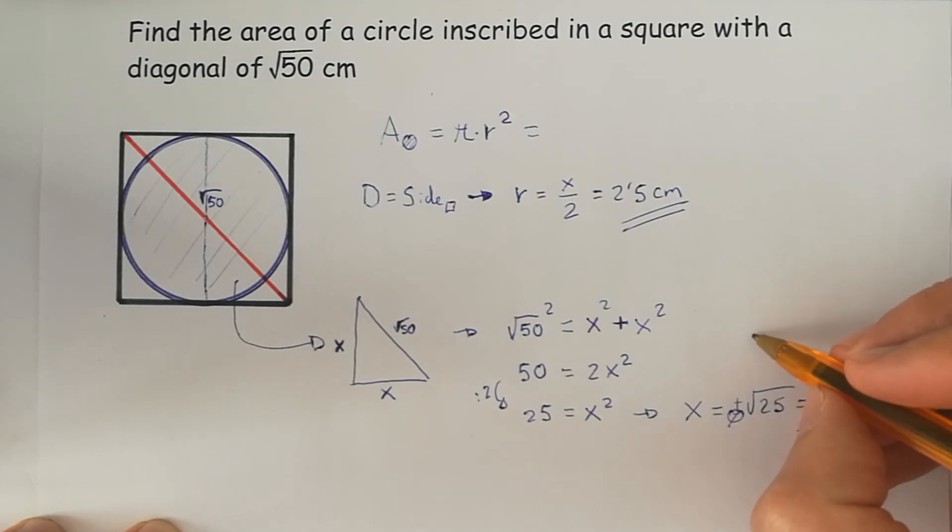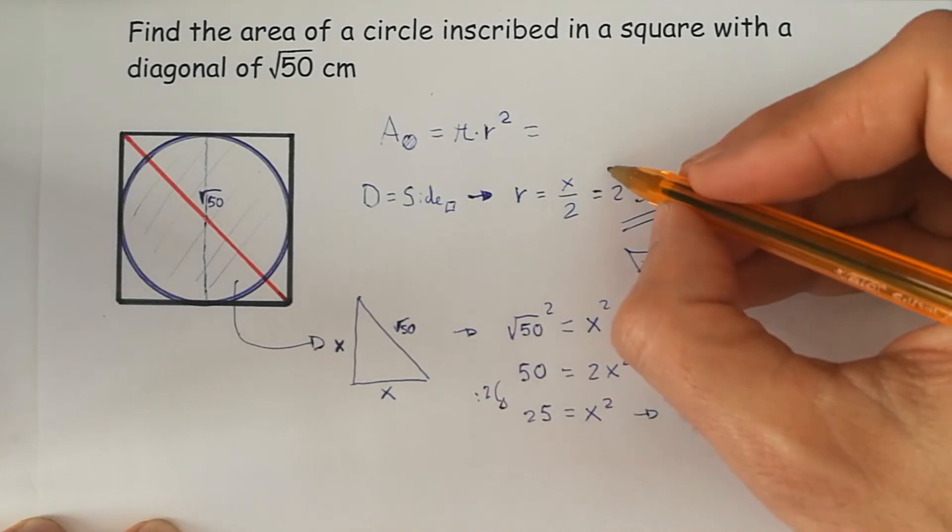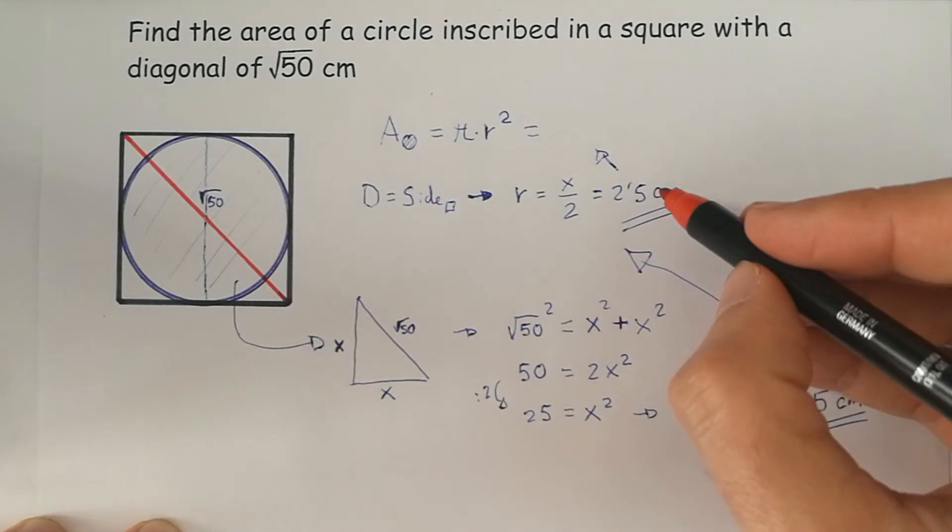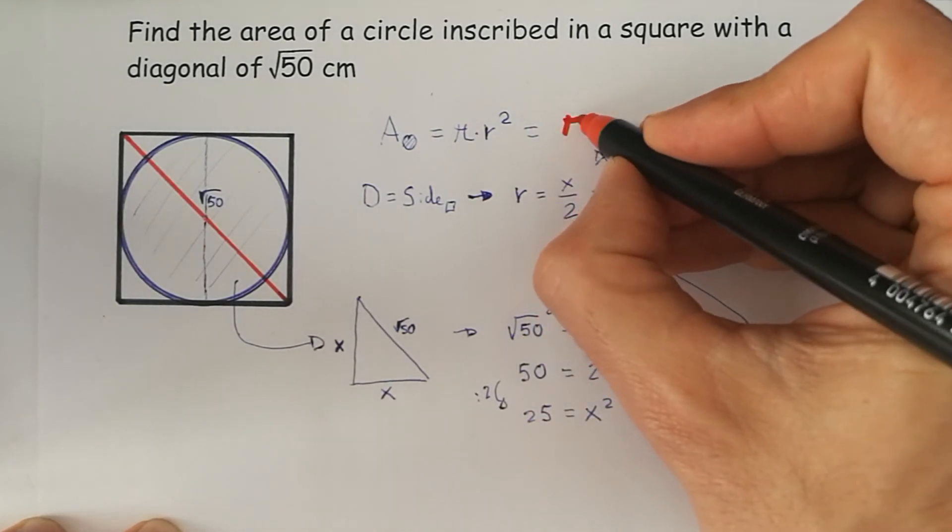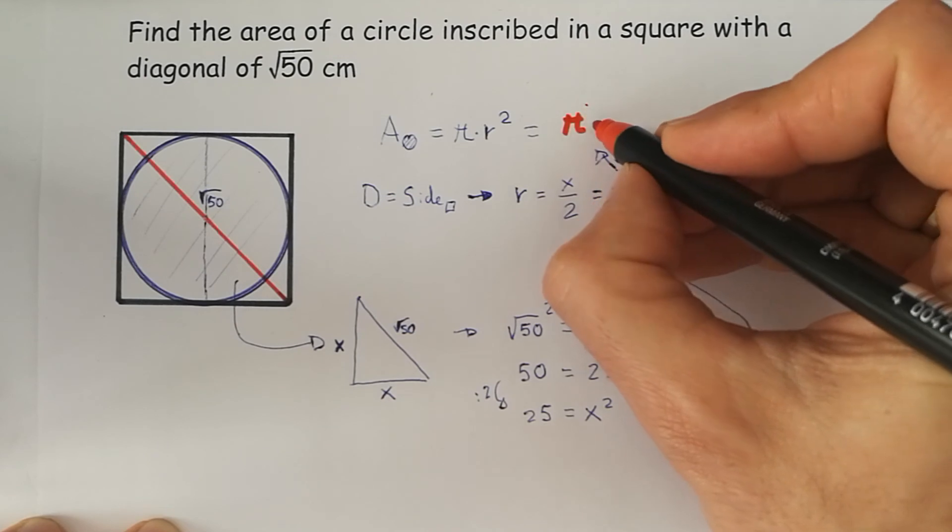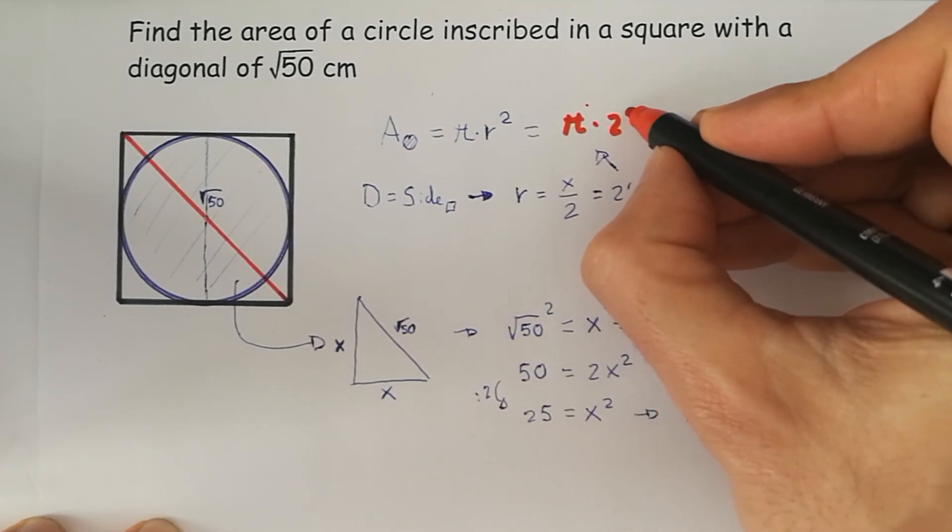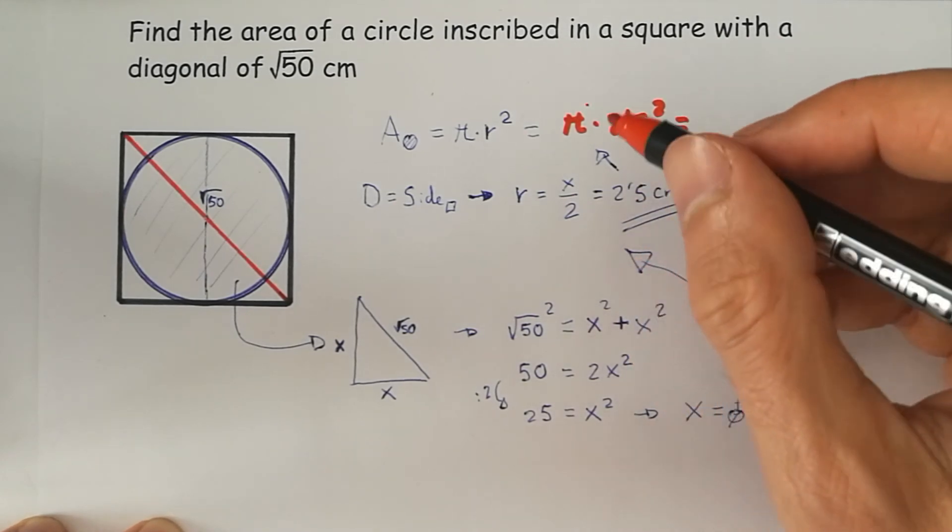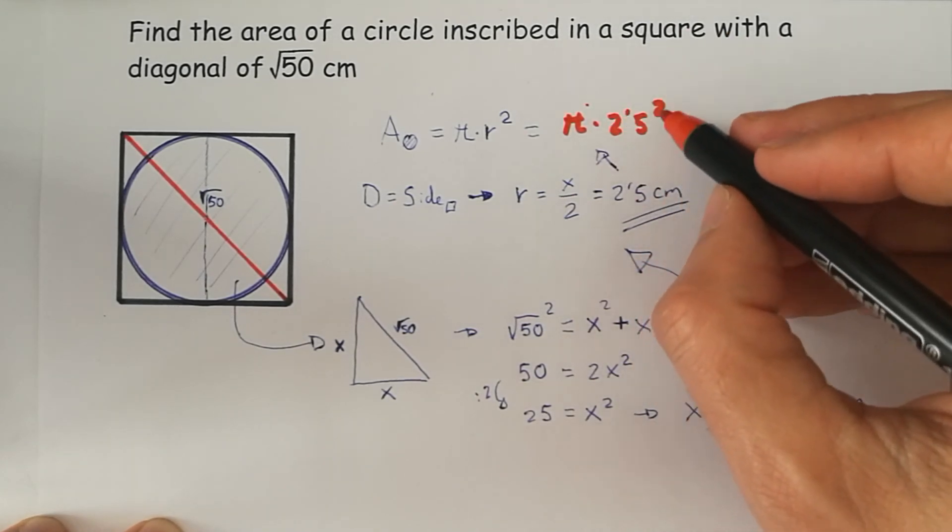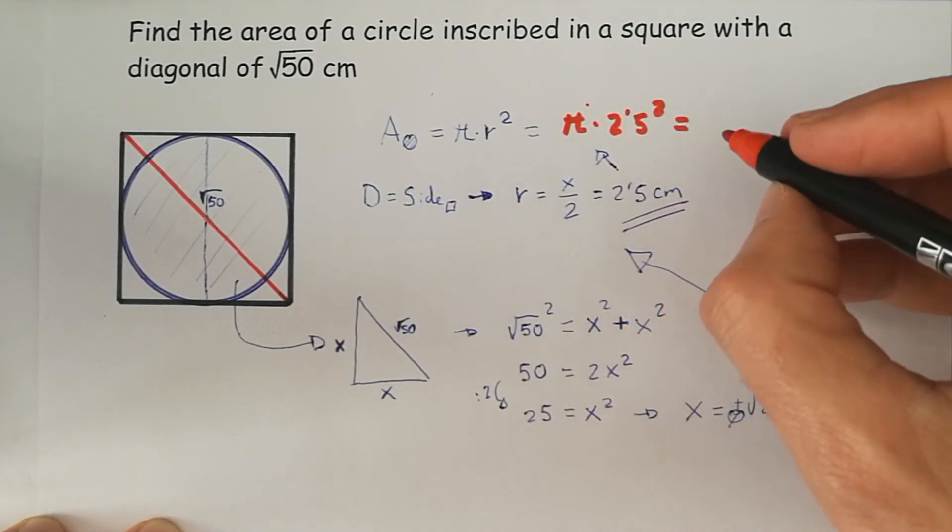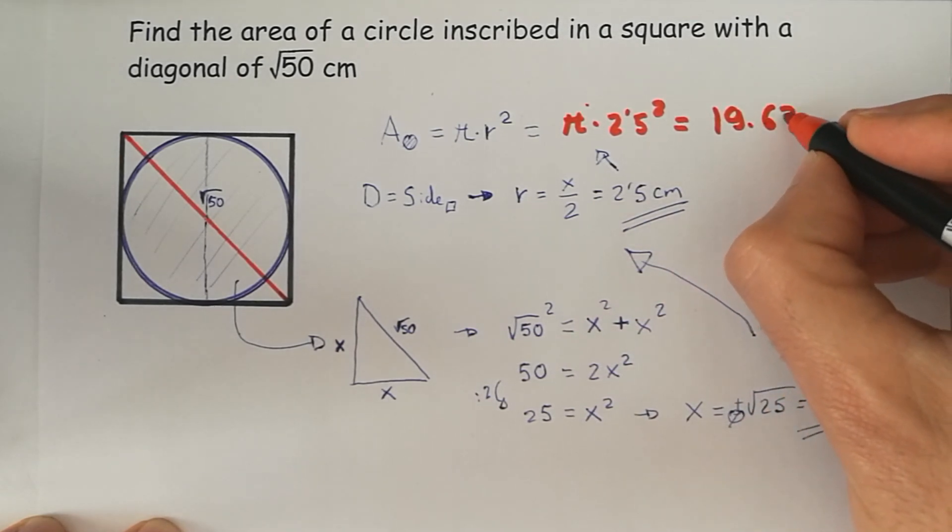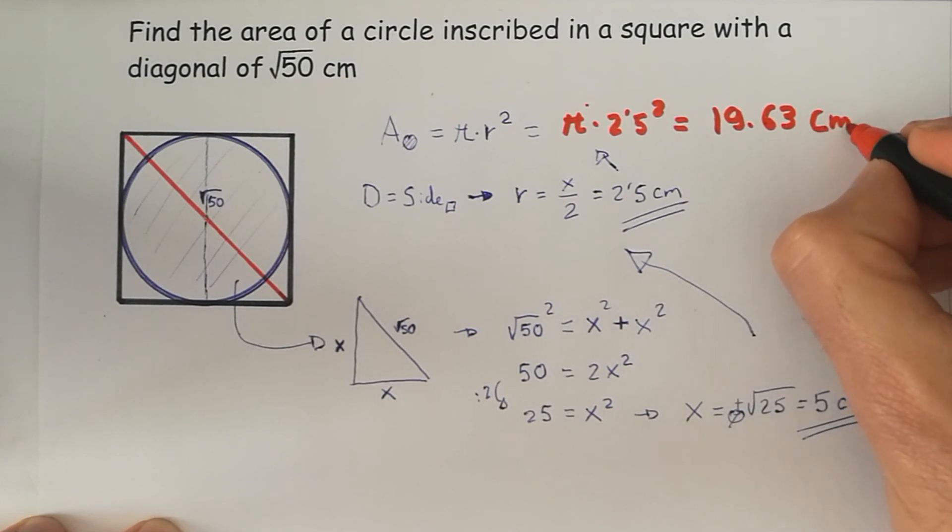Finally, from this we get to that and we're going to solve our problem with this data. π times 2.5 squared. If we do that with the calculator, be careful to do the exponent first. We get 19.63 square centimeters.